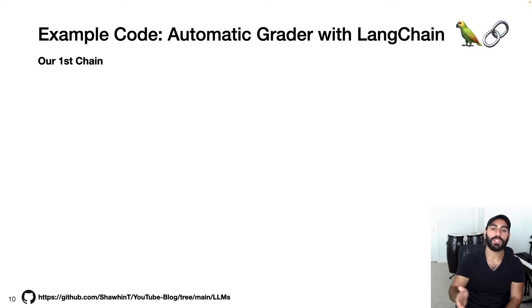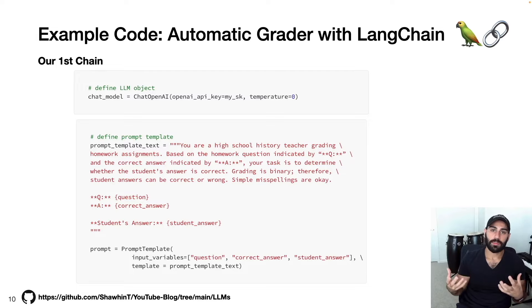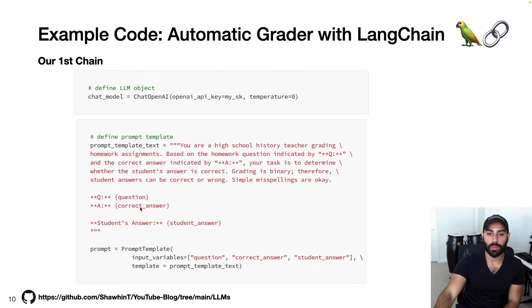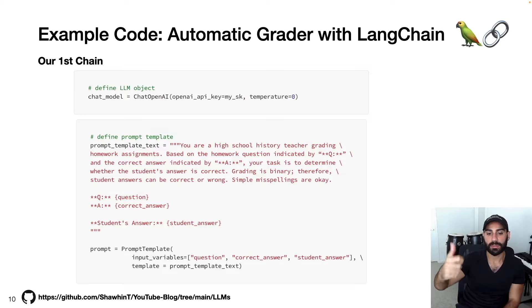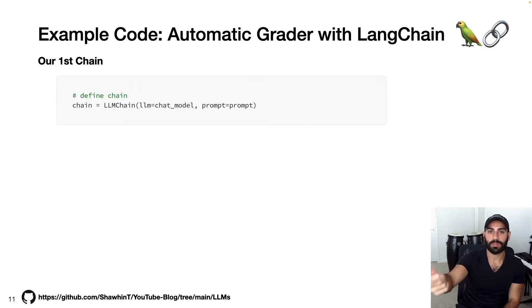Langchain does this through things called chains — essentially a set of modularized steps. The first thing we need is our chat model, here we'll use OpenAI's GPT-3.5 Turbo. Next we need a prompt template — a chunk of text where we can dynamically insert inputs. This is the same grader prompt we saw earlier, with curly brackets for question, correct answer, and student answer. To put the chain together, the syntax is simply: LLM chain with the LLM set to our chat model and the prompt set to our prompt template.